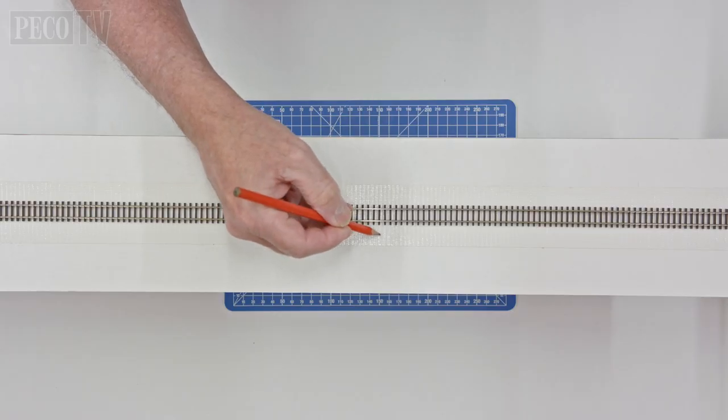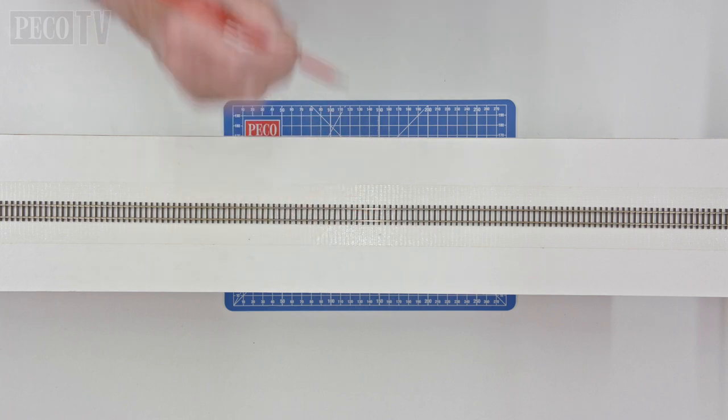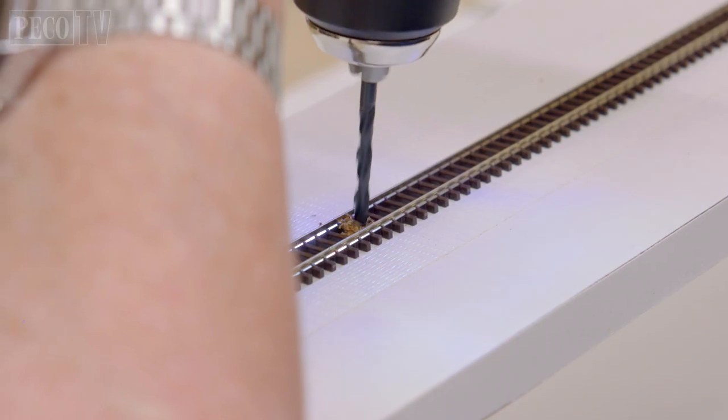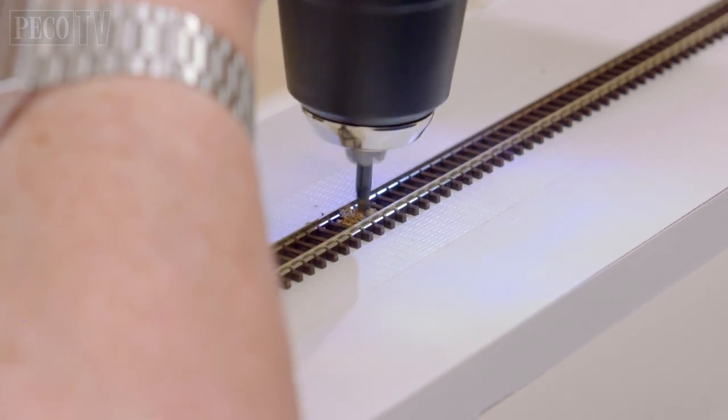We start by selecting the required position on the layout and drilling a 4mm hole centrally between the two rails and sleepers, ensuring the hole is drilled upright and vertically.